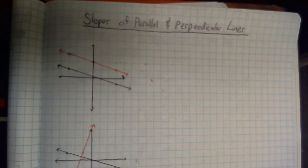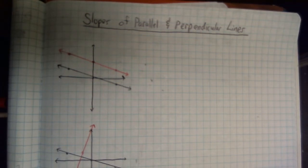Today's topic is slopes of parallel and perpendicular lines. What I'm really talking about is if we're given a line, what is the equation of a line that is parallel to it, and what is the equation of a line that's perpendicular to it?